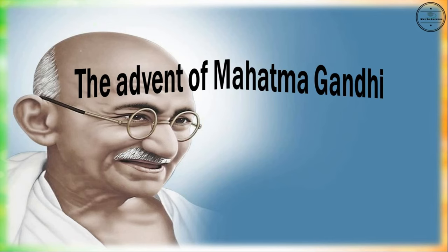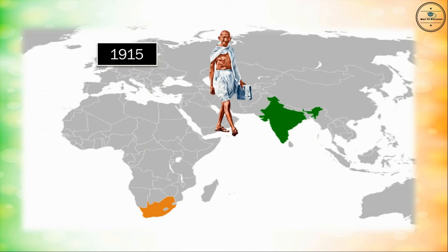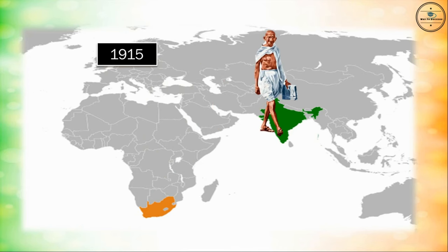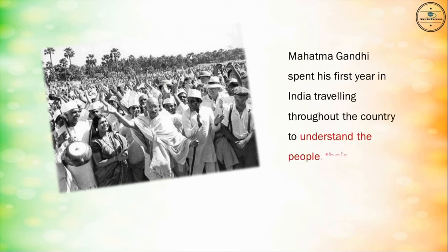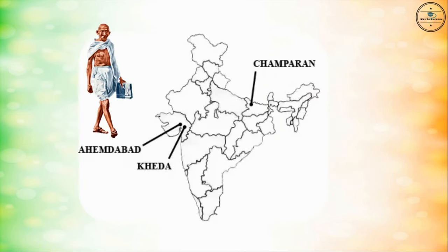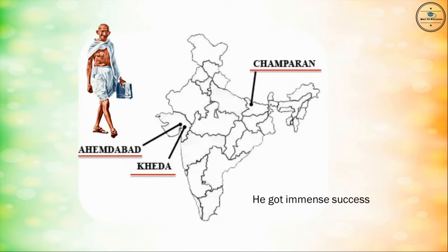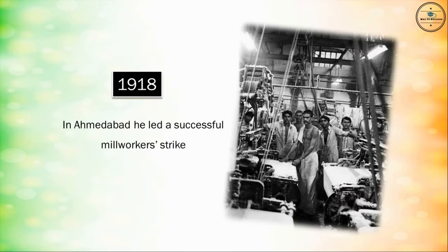Mahatma Gandhi arrived in India in 1915 from South Africa. He spent his first year in India traveling throughout the country to understand the people, their needs, and the overall situation. Afterward, he led local movements in Champaran, Kheda, and Ahmedabad, in which he got immense success. In Ahmedabad, he led a successful mill workers' strike in 1918.